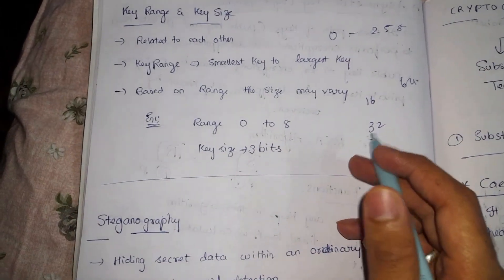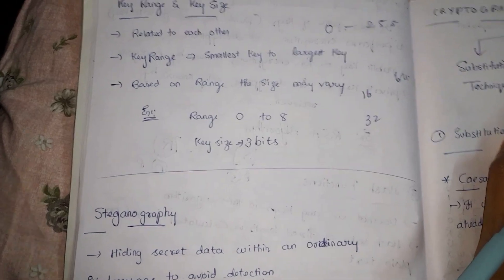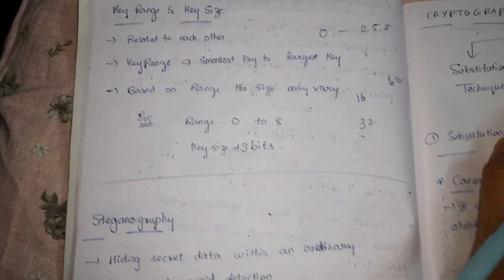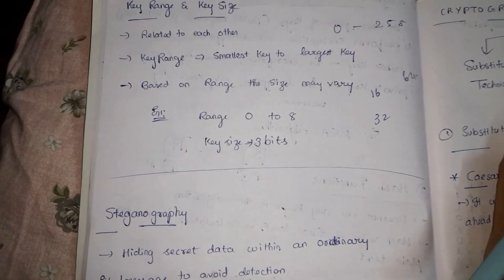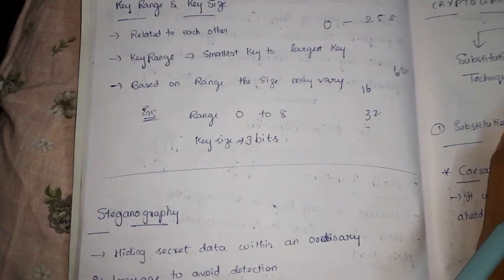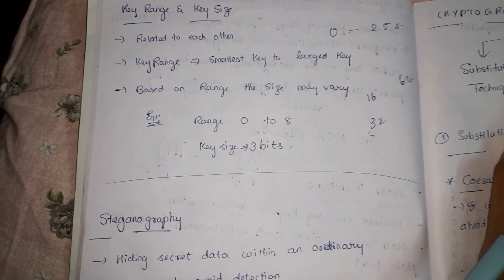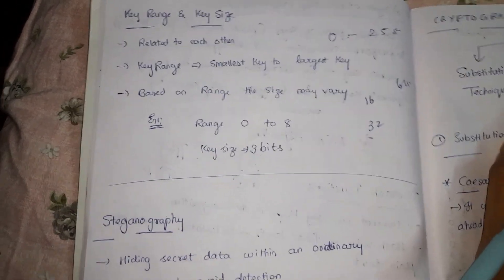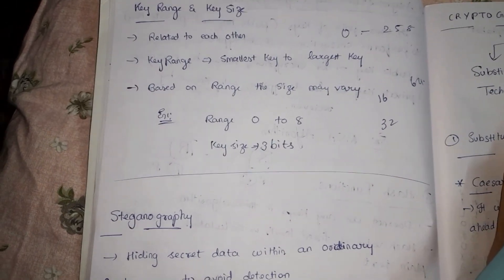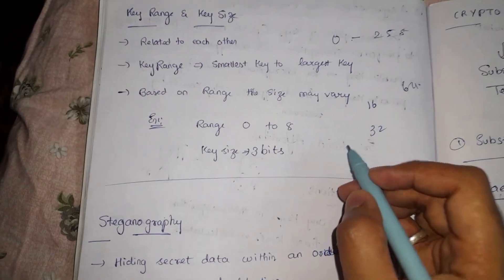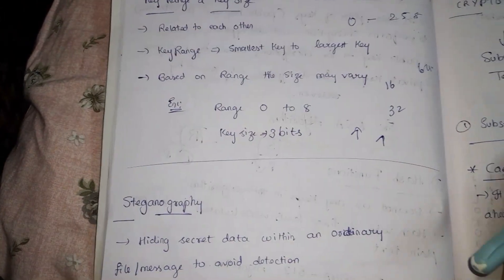Even if the attacker has knowledge of the cryptography algorithms, they will try each and every combination of possible keys to try and decrypt the message so that they can have access to your conversations. So basically, the more the key size or key range, the better it is — a larger key size is said to have a more major impact and to be more secure.